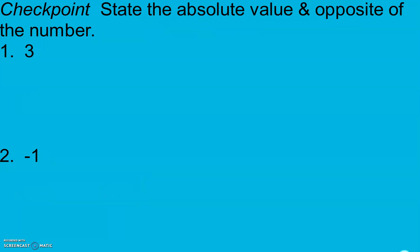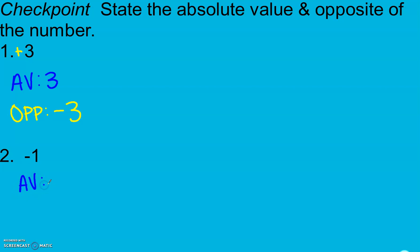Now pause and give this a try — we're going to state the absolute value and opposite of each number. Absolute value of 3: it's 3 units from 0, so the absolute value is 3. The opposite of positive 3 means we go to the left 3, so negative 3. For number 2: absolute value of negative 1 — it's 1 unit to the left, but we don't care about direction — so the absolute value is 1. The opposite: since we went left 1 unit, we go to the right, so positive 1.